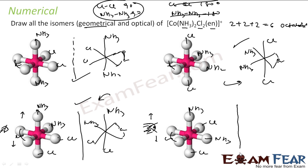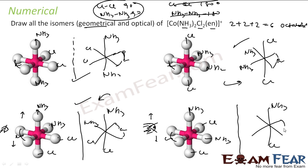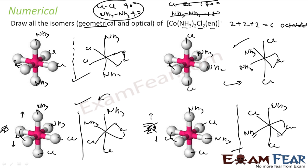For the remaining isomers, draw the mirror image — you get NS3, Cl, EN, Cl arrangements. Checking superimposability confirms they are not superimposable. So they are also optically active. In conclusion, we have four optical isomer pairs and four geometrical isomers for this complex.